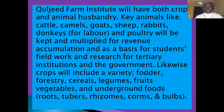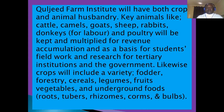Kuljade Farm Institute will have both crops and animal husbandry. Key animals like cattle, camels, goats, sheep, rabbits, donkeys for labour, and poultry will be kept for revenue accumulation and as a basis for students' fieldwork and research. Likewise, crops will include a variety of fodder, forestry, cereals, legumes, fruits, vegetables, and underground foods — roots, tubers, raisins, calms, and barrels — all of these will be on this farm.